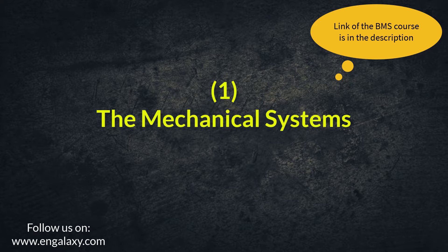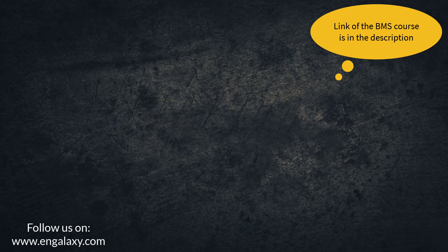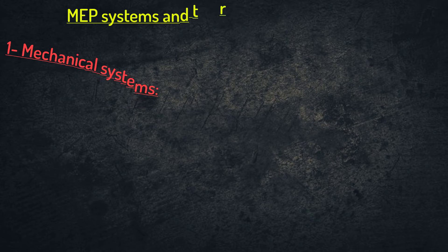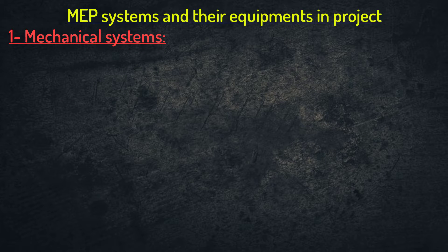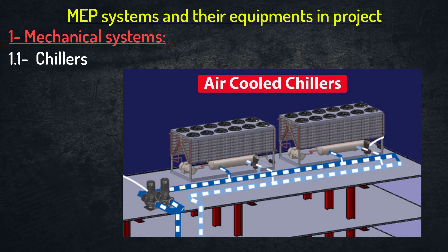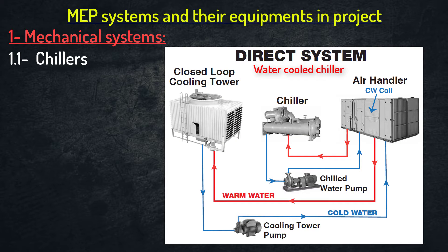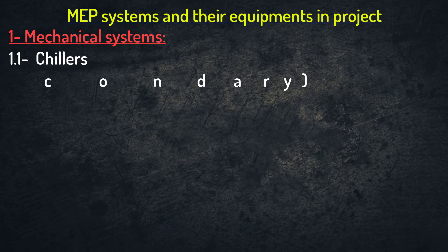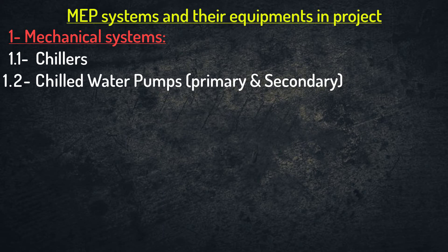We will start talking first about the mechanical systems. The most common mechanical equipment which you can find in most projects are as follows. First, chillers — either air cooled or water cooled. Second, chilled water pumps — either primary pumps or secondary pumps.